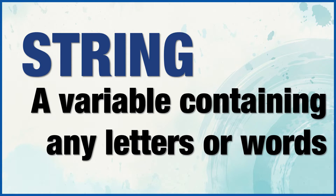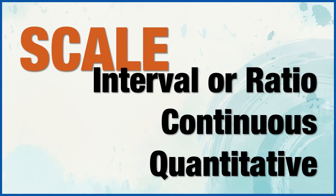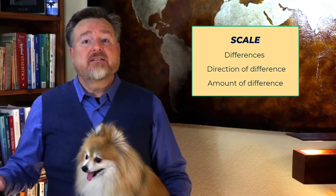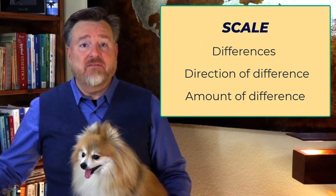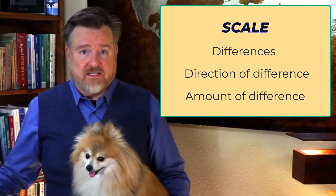There are two more levels of measurement that we will discuss in the next video, and they are scale-level variables — interval and ratio data, also called continuous data or quantitative variables. Scale data tell us an amount; they tell us how much of a difference exists.